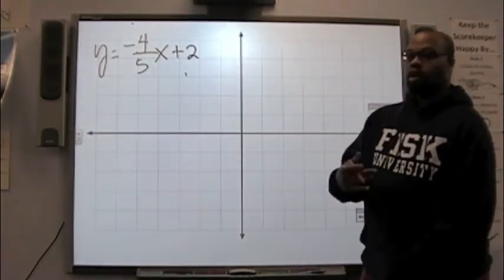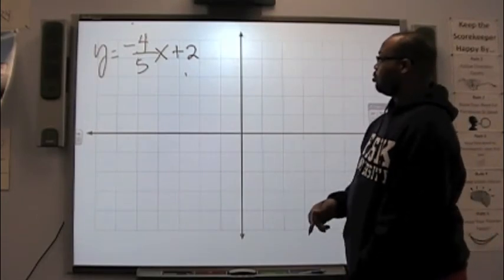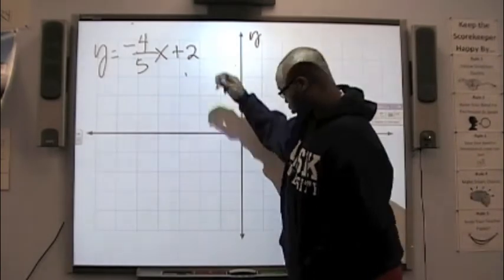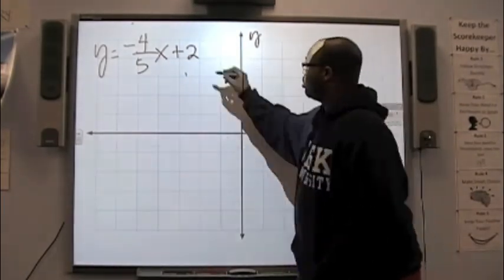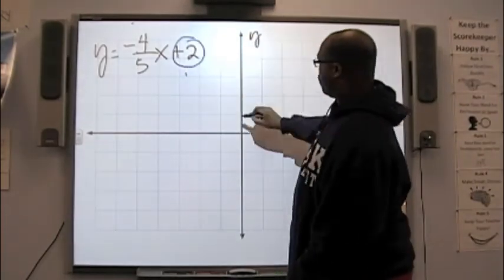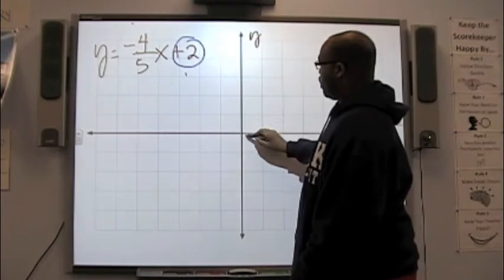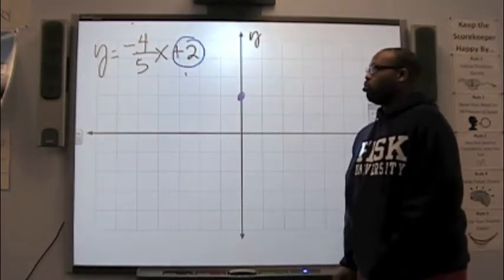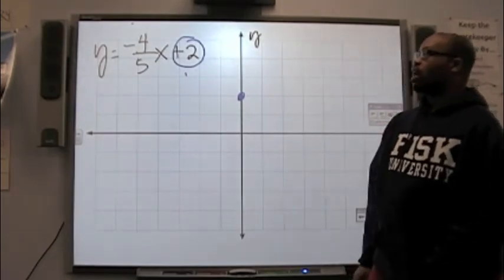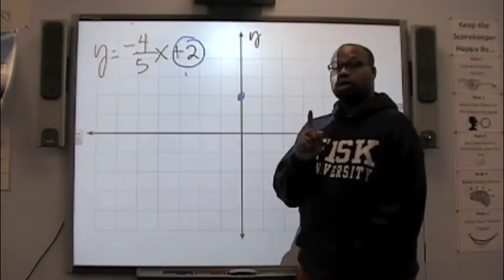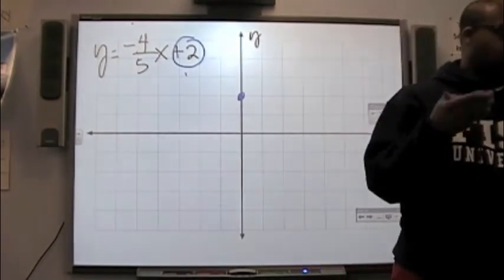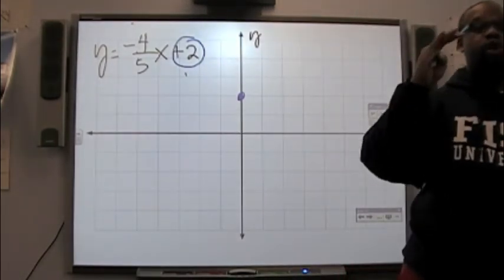Okay, so let's try y equals a negative four-fifths x plus 2. How's that? Yes. All right, and so we're going to start at what number? 2. You're going to start at 2 because the b is 2. Your b is 2. So, y-axis, where is it going to intercept the pass? At 2. There we go.